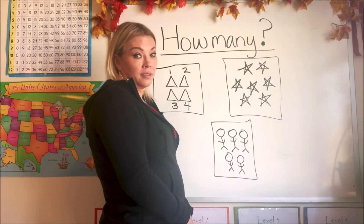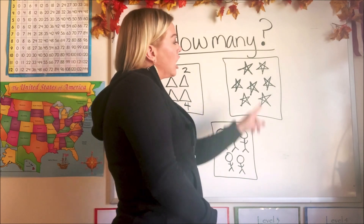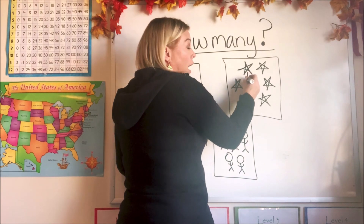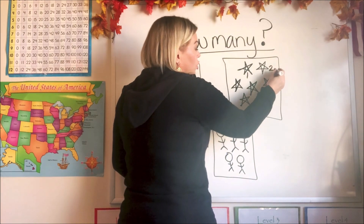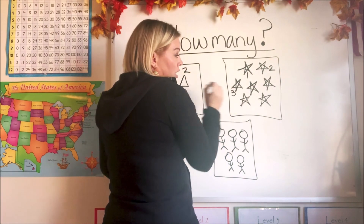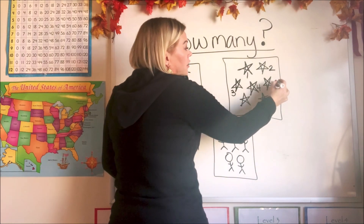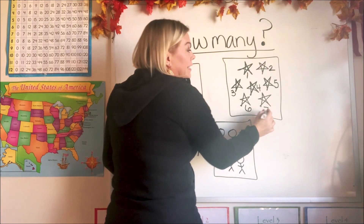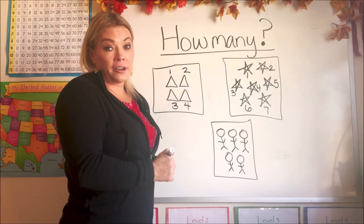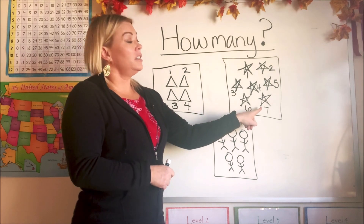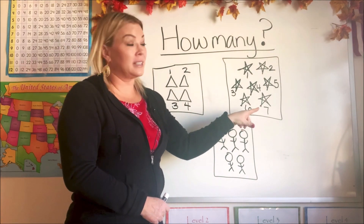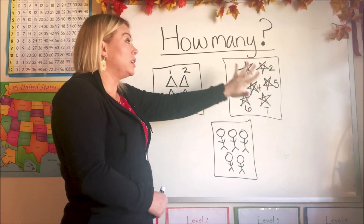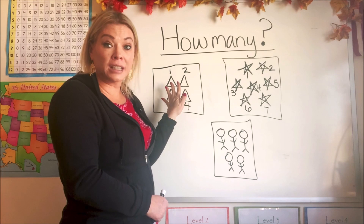Can you see the stars? How many stars are in this group? Let's count. We have one, two, three, four, five, six, seven. There's a lot of stars. This group has seven items in it — seven stars. So this group is larger than our first group. Okay, let's look at the last group.